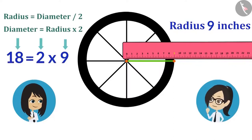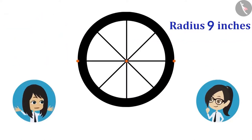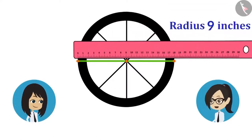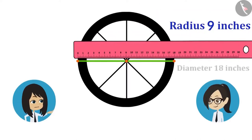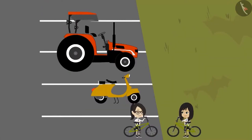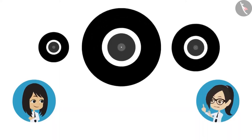Why not measure the diameter of this wheel so that we know our calculation is correct? We will also measure the diameter by drawing a straight line joining both sides through the centre. The diameter is also 18 inches on the scale. Now that we have measured the wheels of the bicycle, why not measure the rest of the wheels as well? Here is the wheel of the scooter, this is the front wheel of the tractor, and this is the tractor's rear wheel.